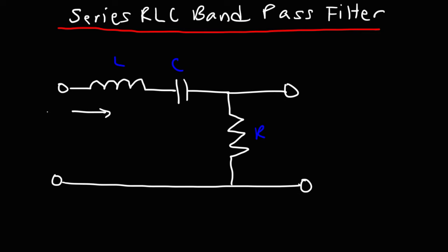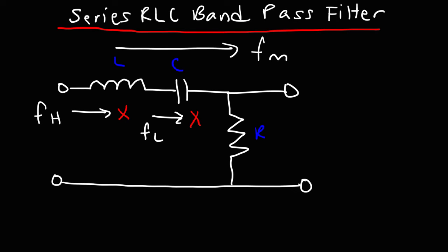Inductors block high-level frequencies — they allow low-level frequencies to pass through but block high-level frequencies. Capacitors block low-level frequencies — they allow high-level frequencies to pass through but the low-level ones are blocked. So if both the low-level and the high-level frequencies are blocked, the only ones that are going to make it through are the mid-level frequencies, particularly those in resonance with the inductor and the capacitor. So the mid-level frequencies will have the highest output — thus, we have a bandpass filter. A band of mid-level frequencies will be passed through this filter in the output.